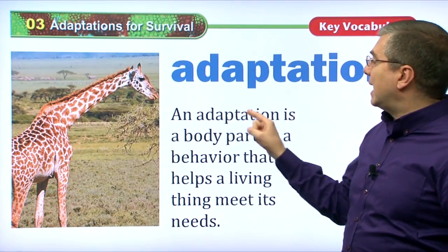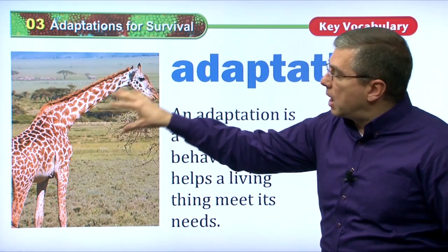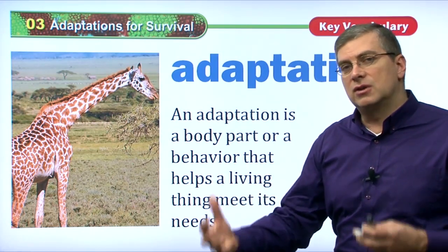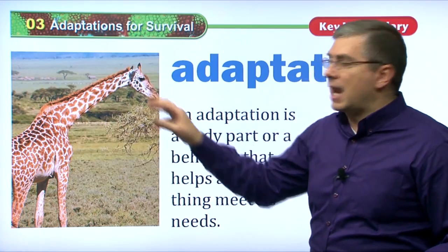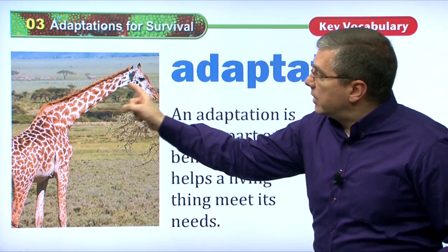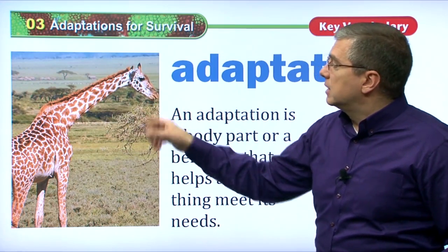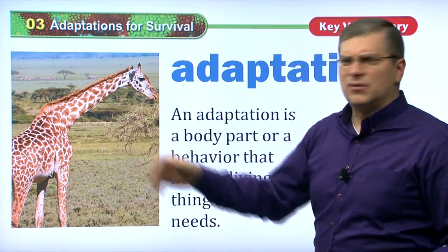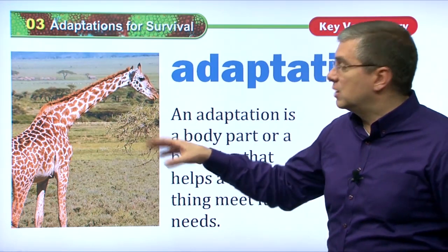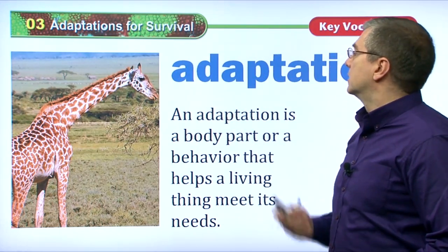An adaptation is a body part or behavior that helps a living thing meet its needs. So we have a body part or behavior that the animal will change as part of its body in order to survive or to meet its needs. If we take a look at a giraffe, giraffes grew very long necks over a very long time. This is how their bodies have changed in order to meet their needs. Animals need food, so to change to their environment they will grow different body parts — very interesting body parts — in order to adapt to their environment. Trees have very high branches; how can they get the food? They can grow a long neck, and that's what a giraffe did. So that's an adaptation.